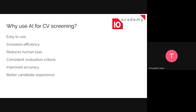The second thing is it increases efficiency - we can screen and go through a lot more CVs using AI than what we would do manually. It also reduces human bias because humans can be biased, but AI is going to have a consistent evaluation criteria for all applicants. It also improves the accuracy of the screening.